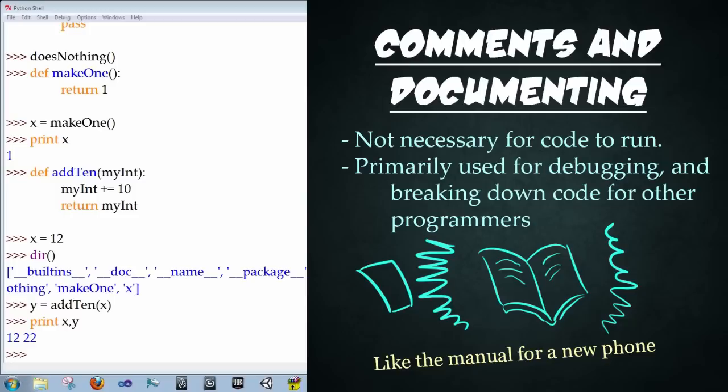So next we're going to discuss comments and documenting. And these are the most important, non-essential parts of programming. In other words, your code will work fine without it, but it will make your life hell if it's not there. So a way to think of this is if you're given code, you can think of it as being given a cell phone. And the comments are like the manual of the phone. And without the comments or documentation, you may not be able to figure out how this new code or new phone works. So they're important to have.